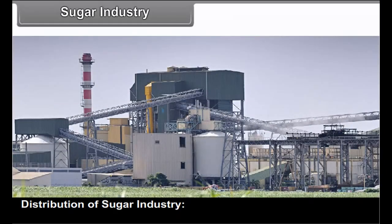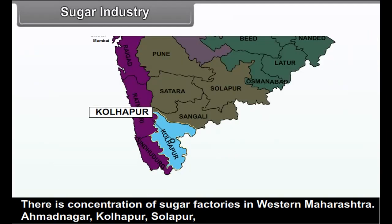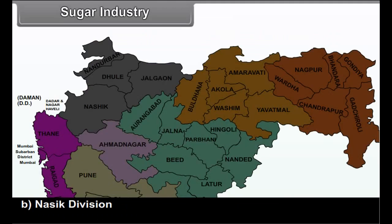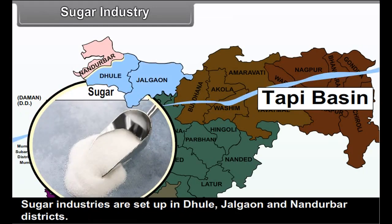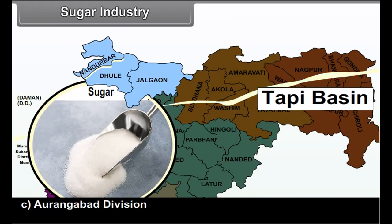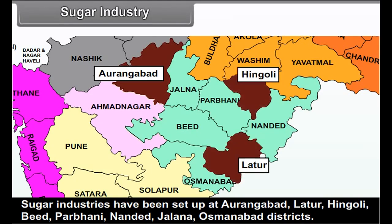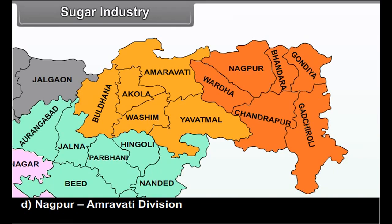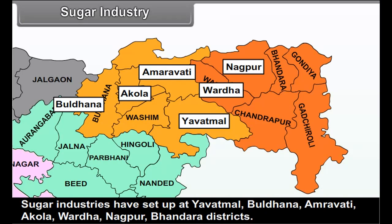The first sugar factory in Maharashtra was set up at Belapur in Ahmednagar district in the year 1920. Distribution of sugar industry: (a) Pune division — there is a concentration of sugar factories in western Maharashtra; Ahmednagar, Kolhapur, Solapur, Pune and Satara are prominent districts. (b) Nasik division — sugar industries are set up in Dhule, Jalgaon and Nandurbar districts. (c) Aurangabad division — industries at Aurangabad, Latur, Hingoli, Beed, Parbhani, Nanded, Jalna and Osmanabad districts. (d) Nagpur-Amravati division — industries at Yavatmal, Buldhana, Amravati, Akola, Wardha, Nagpur and Bhandara districts.